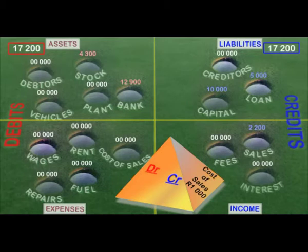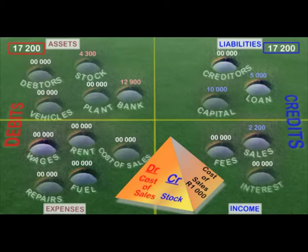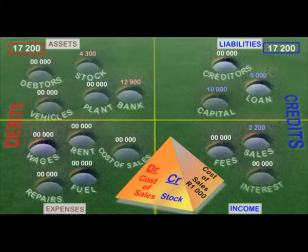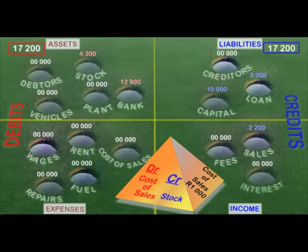This second set of entries attached to a sale always follows the same pattern: reduce stock by crediting that pocket or account, and debit the cost of sales account in the income statement. Both of these pockets have debit balances and therefore the cost of sales entries have no impact on the debit balance counter. Remember that we saw the same thing happen when we looked at stock and bank — also two accounts that have debit balances. So step 3: debit cost of sales.